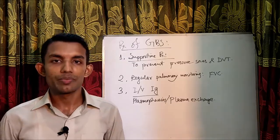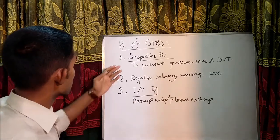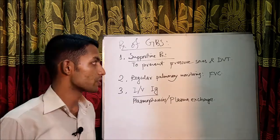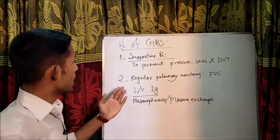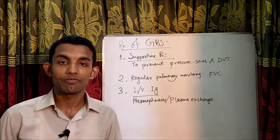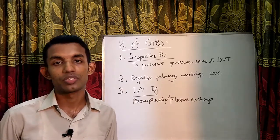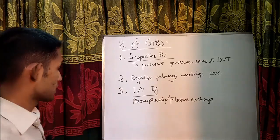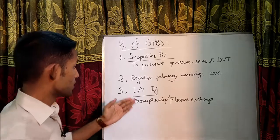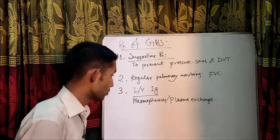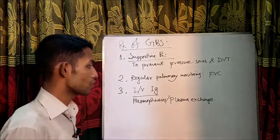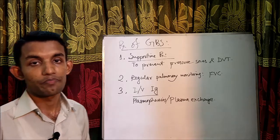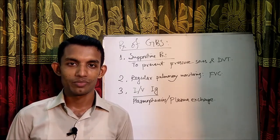Treatment of GBS includes: supportive treatment to prevent pressure sores and deep vein thrombosis; regular lung function monitoring because respiratory failure is the most common complication; intravenous immunoglobulin; and plasmapheresis or plasma exchange to remove the antibodies. This is all about Guillain-Barré syndrome.